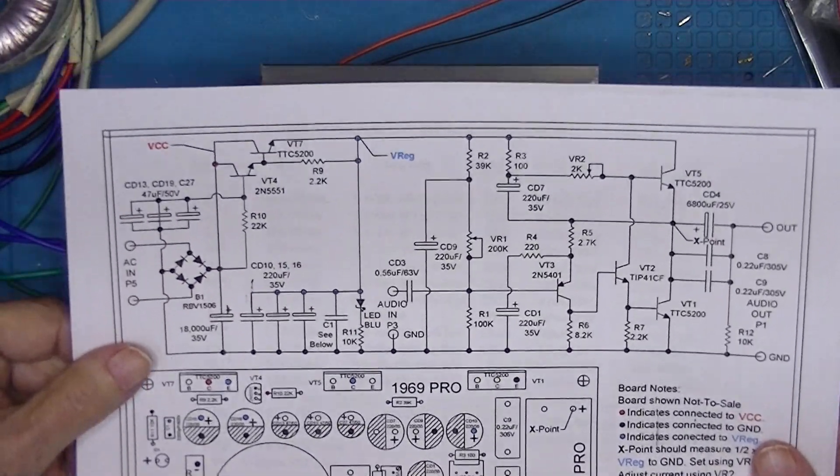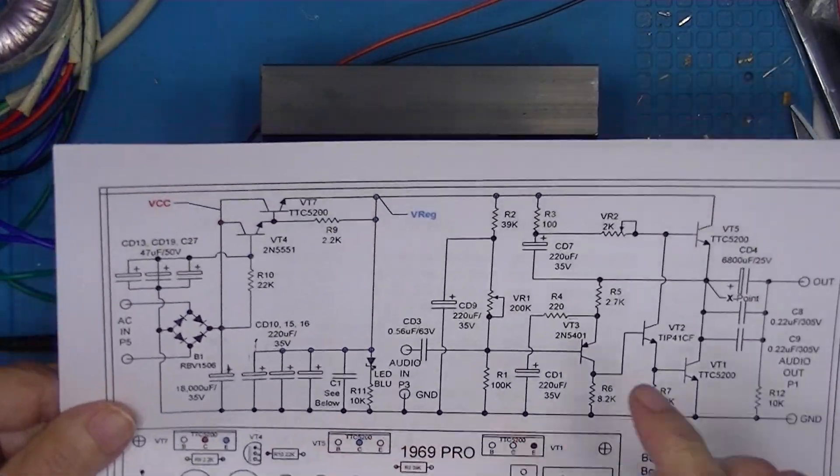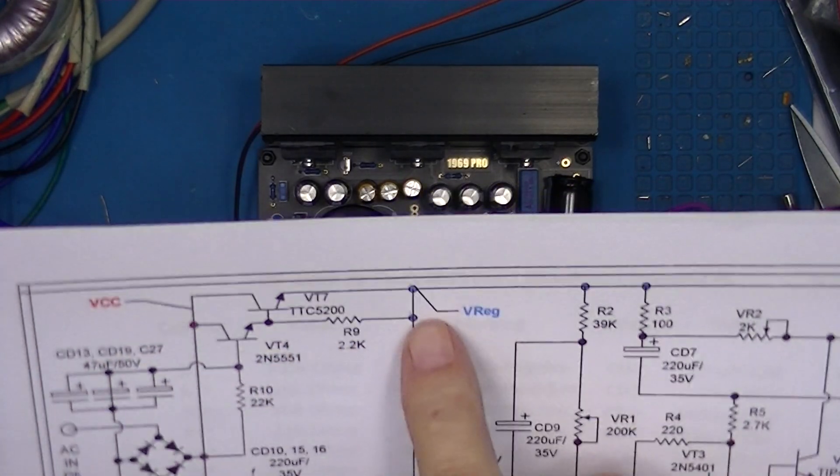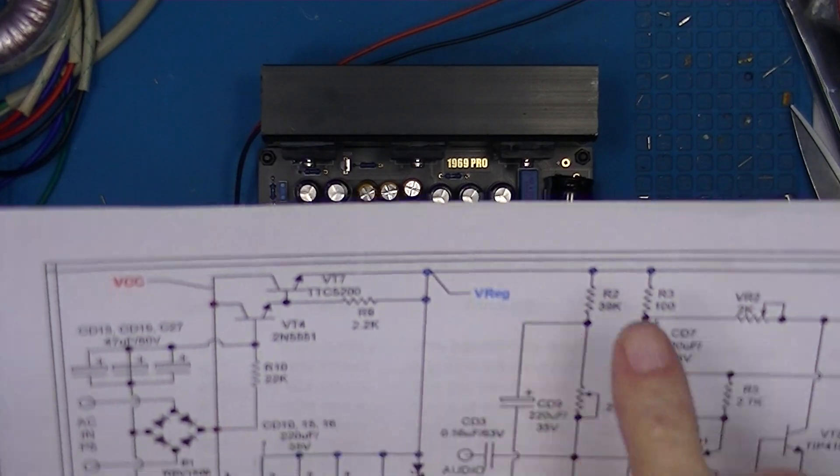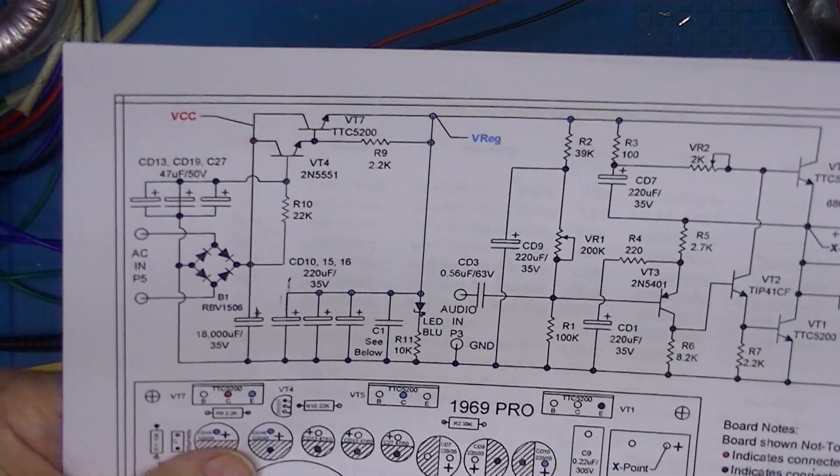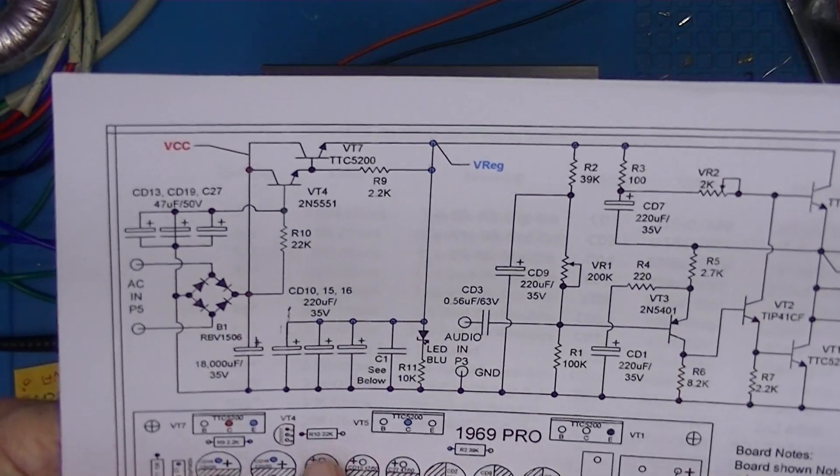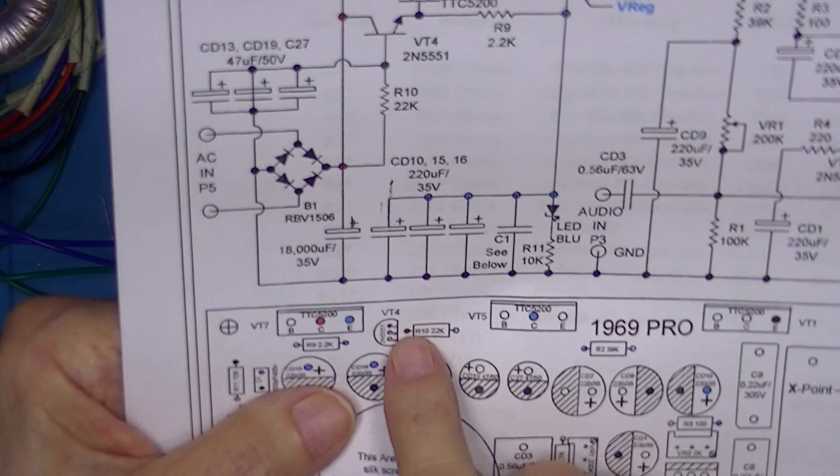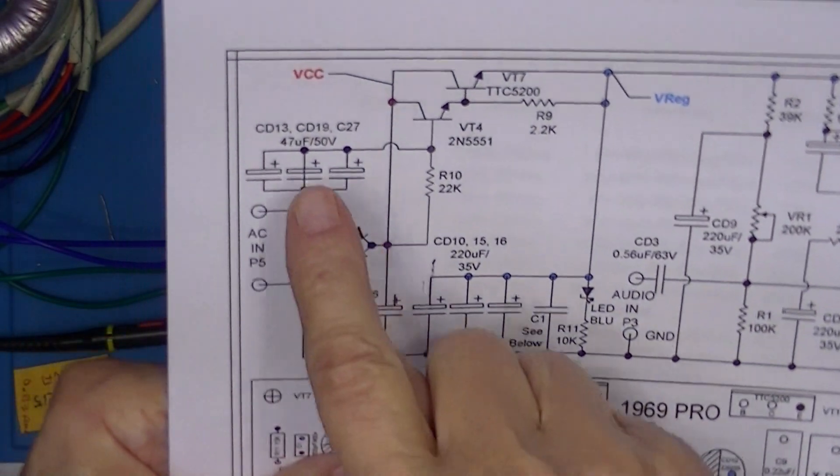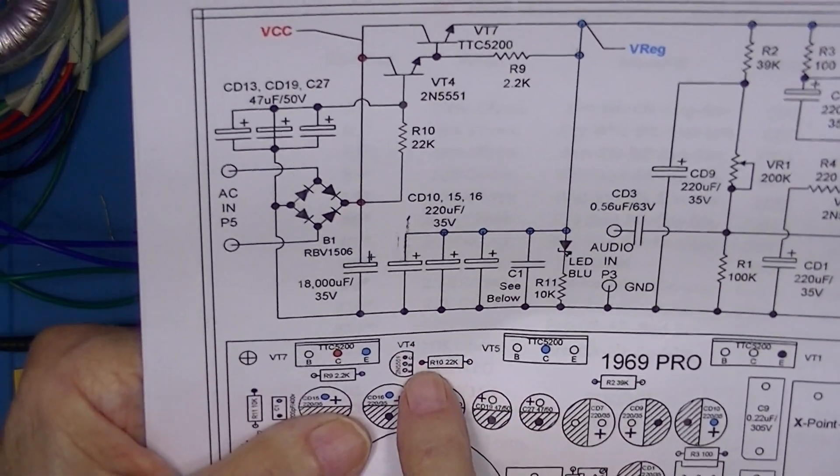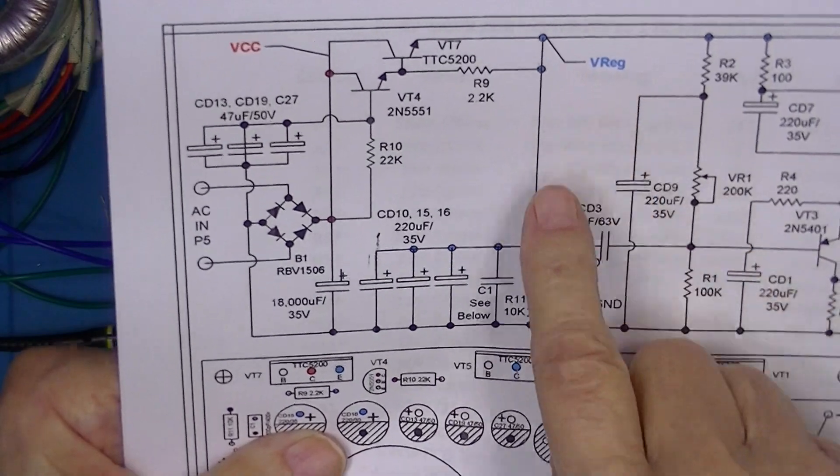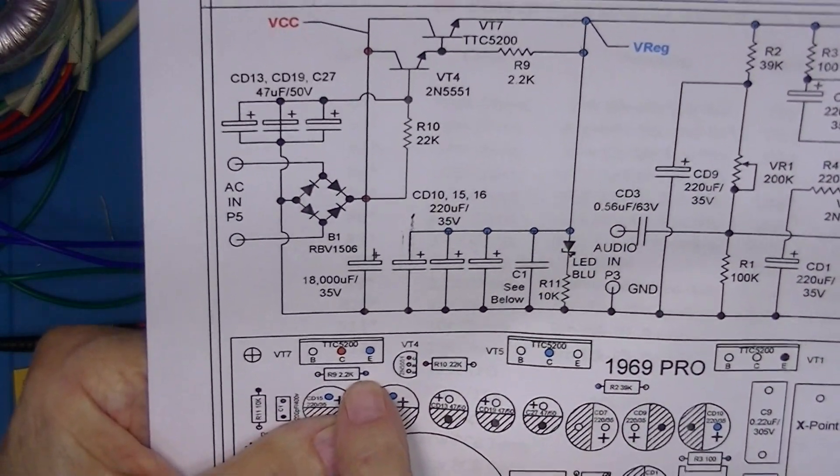Now you'll notice that on my drawings, these are color-coded: VCC is red and VREG is magenta. I have indicated in red where you can read VCC and where you can read VREG, which is here.